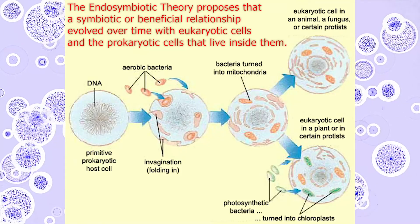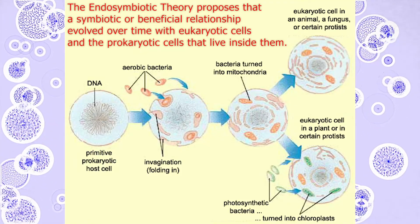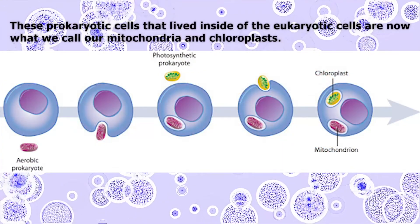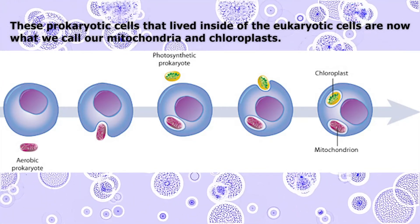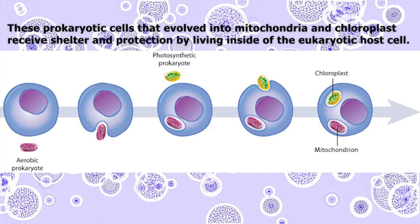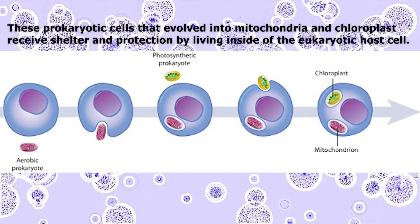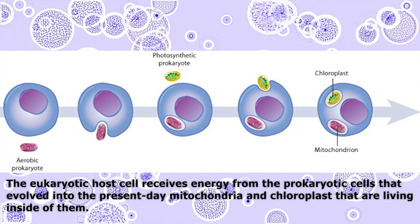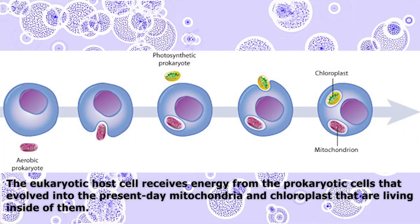The endosymbiotic theory proposes that a symbiotic or beneficial relationship evolved over time with eukaryotic cells and the prokaryotic cells that live within them. These prokaryotic cells that live inside of the eukaryotic cells are now what we call our mitochondria and chloroplasts. These prokaryotic cells received shelter and protection by living inside of the eukaryotic cells, and the eukaryotic host cell receives energy from the prokaryotic cells that evolved into the present-day mitochondria and chloroplasts living inside of them.